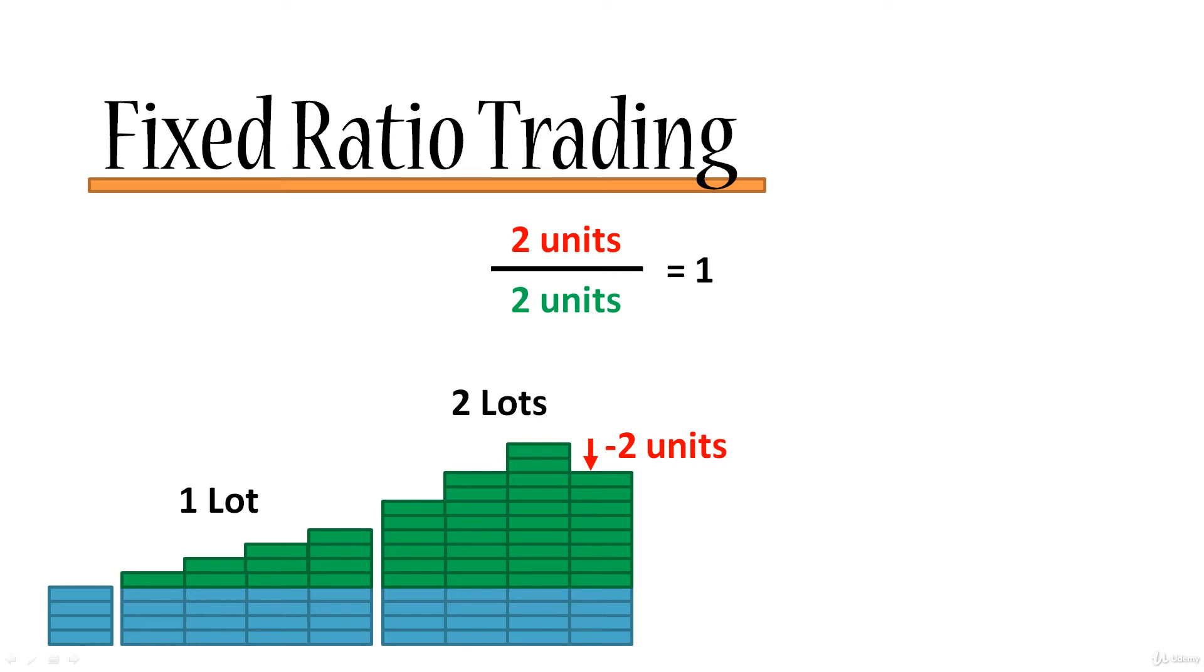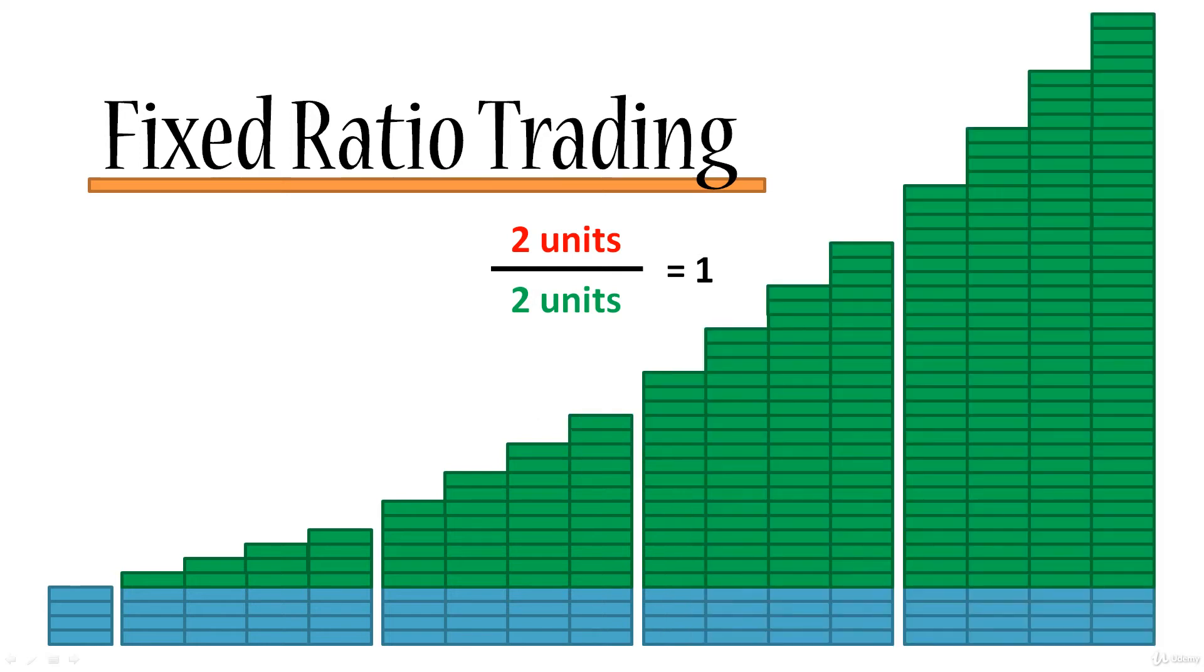Let's go back to the overall visualization. You can see that this ratio applies on this trade, it also applies on this trade, and also on this trade. However, on the trade before that, if it were a loss, we would actually lose two units as opposed to the one unit that we earned on the trade before that.